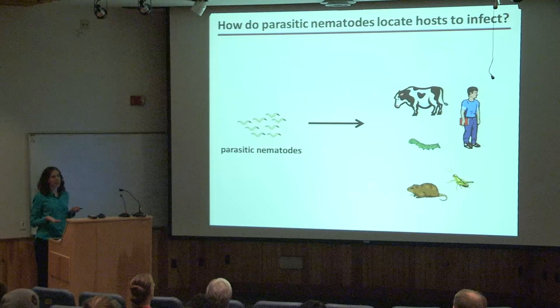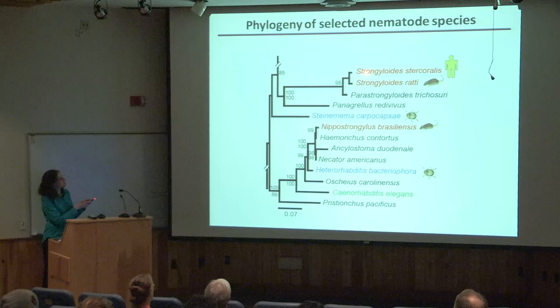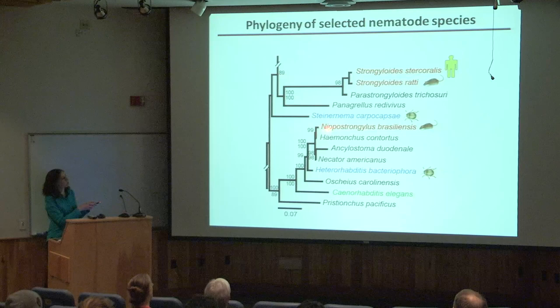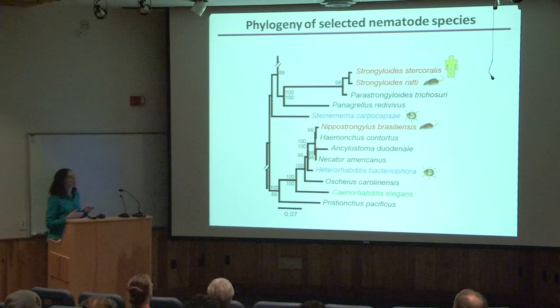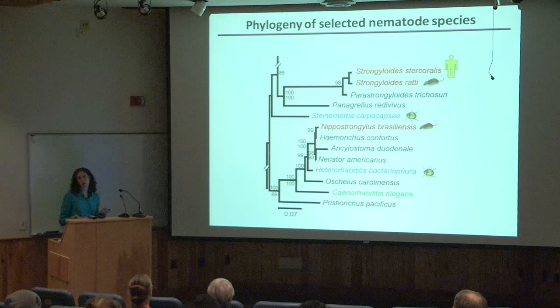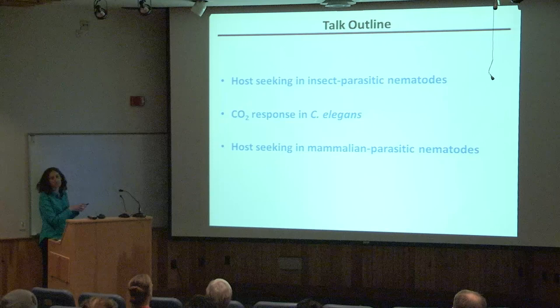One of the major questions my lab has been focusing on is: how do parasitic nematodes locate hosts to infect? We're addressing this question using a number of different nematode species as models, including the human parasite Strongyloides stercoralis, a closely related rat parasite Strongyloides ratti, and a more distantly related rat parasite Nippostrongylus brasiliensis, the rat hookworm. We also work with insect parasitic worms, including Steinernema carpocapsae and Heterorhabditis bacteriophora, as well as the free-living nematode C. elegans as a comparative model. In this talk, I'll first cover host-seeking in insect parasitic worms, then CO2 response in C. elegans, and finally host-seeking in mammalian parasites.